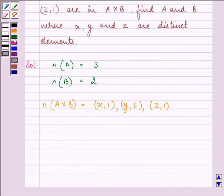We know that the first element of the ordered pair belongs to the first set. So, we can have that it is equal to 3 and we can write that it is equal to x, y, z as it is given to us. They are distinct elements.